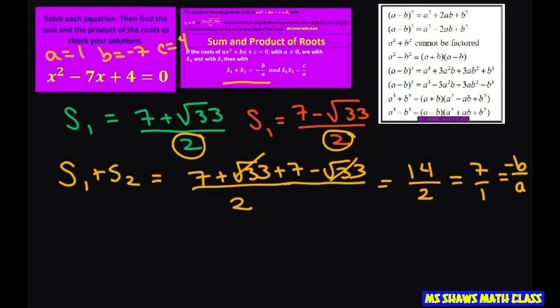That means our a is 1, which is what we have, and our b is -7, because we have -b equals 7, so b equals -7. Now let's do our product. The product means we multiply these, and that's going to give